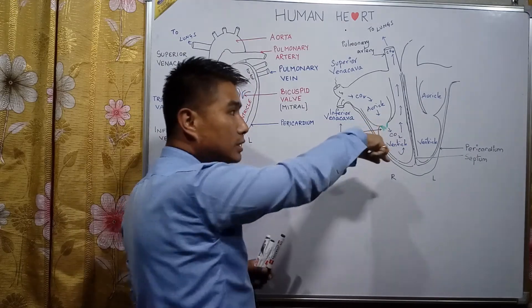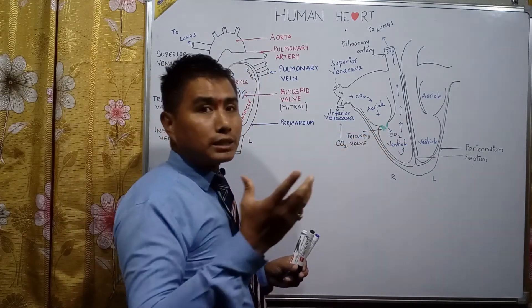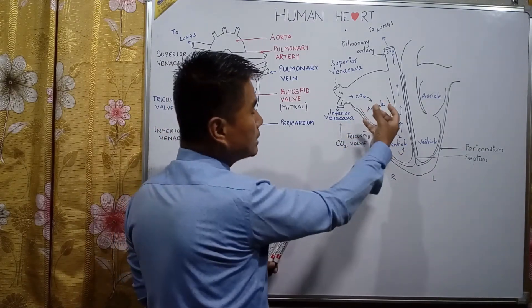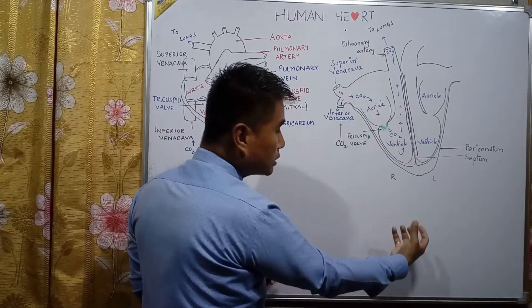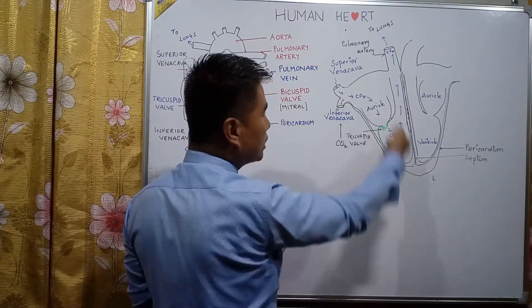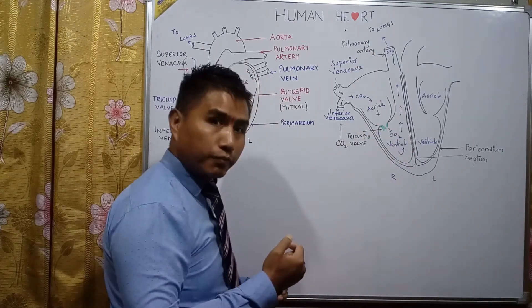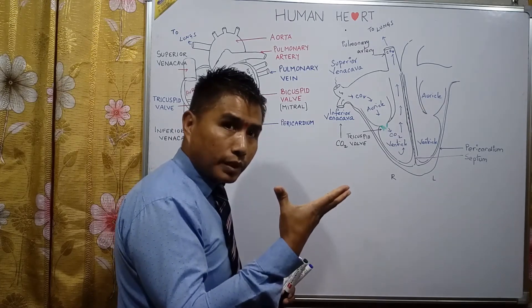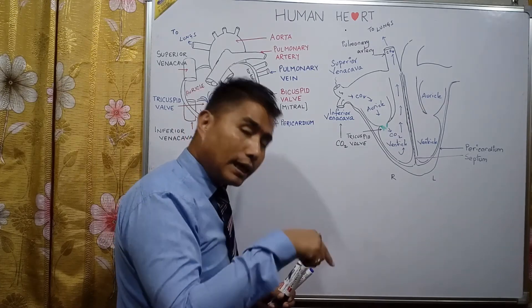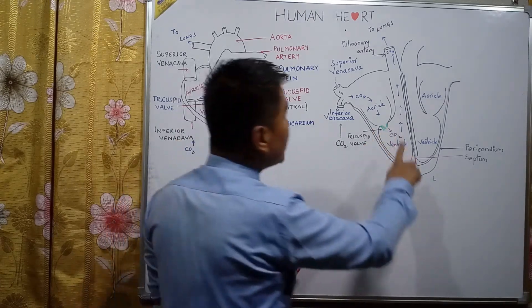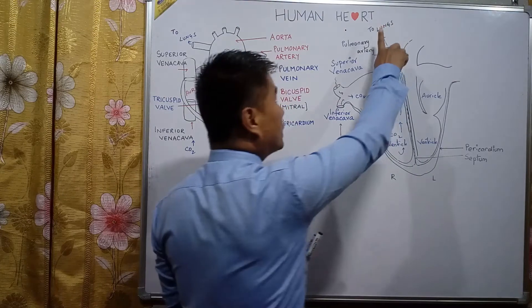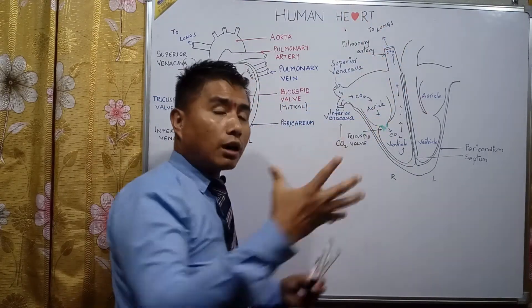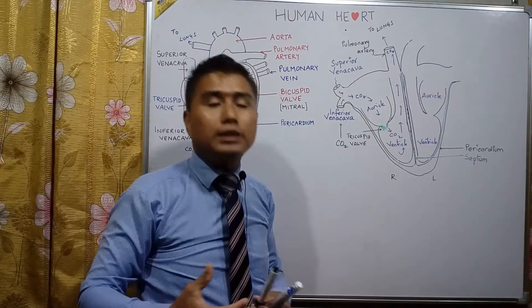The tricuspid valve is designed so that it opens only in one direction, so blood is sucked from the auricle to the ventricle. However, because of the suction force, the outgoing blood in the pulmonary artery toward the lung might also be sucked back.